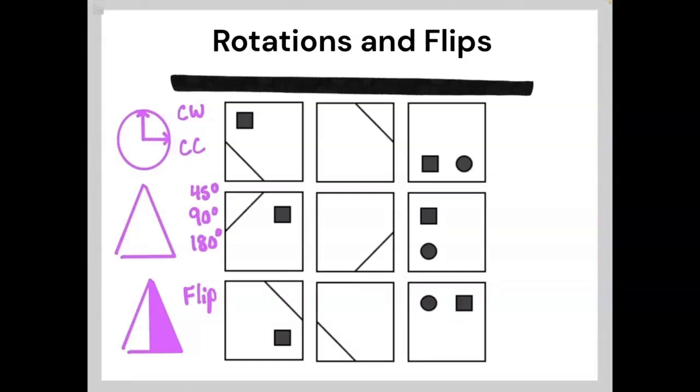Counterclockwise would be if the hands on the clock moved in the opposite way they were supposed to. If you started from the top of the clock and went left, down, and around, that would be counterclockwise.